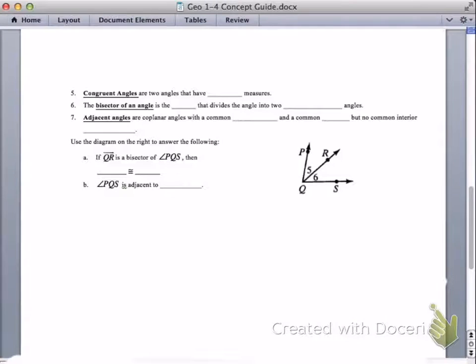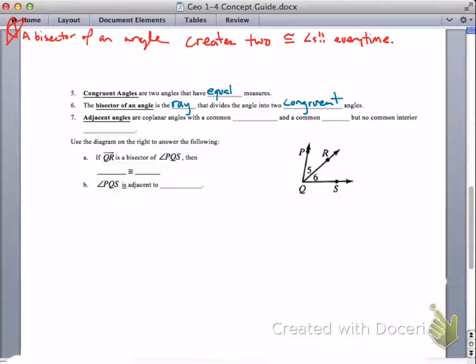Moving on. Congruent angles are angles that have equal measure. Same size, same shape. Well, angles can... The shape of an angle is how wide the opening is. The bisector of an angle is the ray, or segment, that divides the angle into congruent angles. This is just like what a midpoint does. Notice there's no such thing as a midpoint for angles. We have rays. So we go straight from the angle bisector to congruent angles. Just to emphasize this, yeah, a bisector of an angle creates two congruent angles every time, like a midpoint does for segments, makes congruent segments.